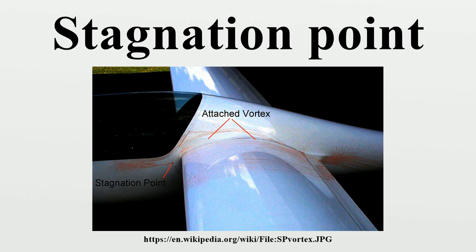Kutta condition: On a streamlined body fully immersed in a potential flow, there are two stagnation points — one near the leading edge and one near the trailing edge. On a body with a sharp point such as the trailing edge of a wing, the Kutta condition specifies that a stagnation point is located at that point. The streamline at a stagnation point is perpendicular to the surface of the body.